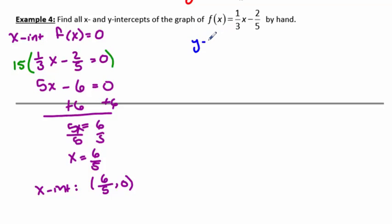For the y intercept, we know that if you want the y intercept, you're going to plug in 0 for x. So you're looking for f of 0. f of 0 is going to be 0 minus 2 fifths or negative 2 fifths. So your y intercept is the ordered pair 0, negative 2 fifths.